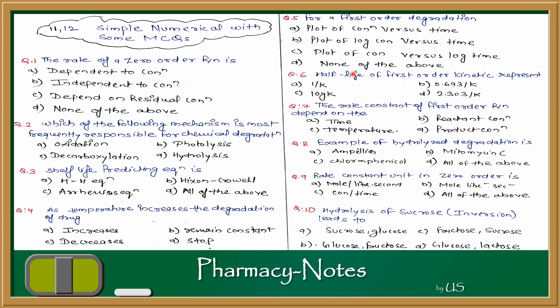Question 6: half-life of first order kinetics — which formula represents it? As we derived the formula, the answer is 0.693 upon k. So the answer is B: 0.693/k.